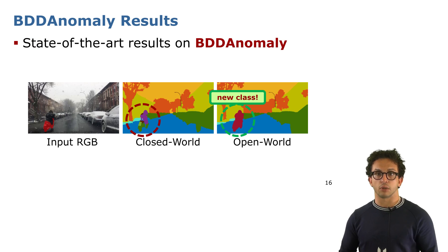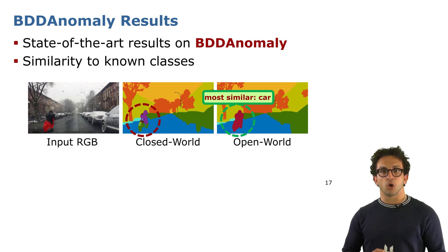We also used BDD Anomaly, which is an autonomous driving dataset, achieving state-of-the-art results. For BDD Anomaly, we also gave the results for class similarity. So for each newly discovered class, we give a measure of which known class is most similar to it.